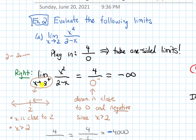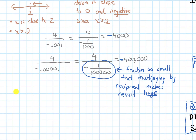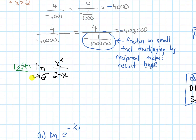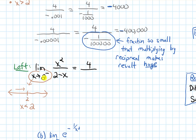Now let's do the limit from the left: the limit as x approaches two from the left of x squared over two minus x. When x is approaching two from the left-hand side, x is less than two. So on the denominator, I'm actually doing two minus a number a little bit smaller than two — like 1.99 — so the denominator is really close to zero but a little bit bigger than it.